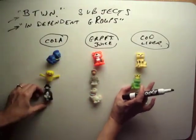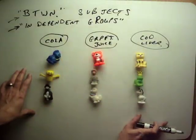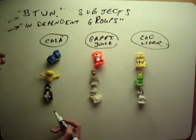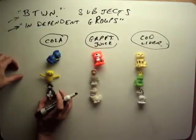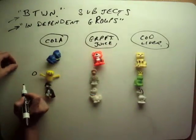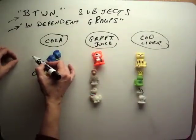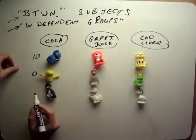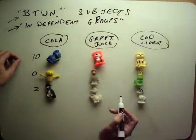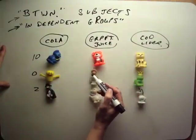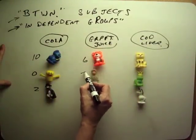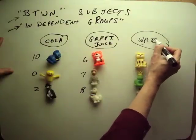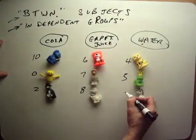This will not be the case when we move to a repeated measures design, but for now different people are in different groups; each person got a different treatment. For example, the alien has taste buds that don't match cola and said it was a zero; the monkey has a sweet tooth and loved it, rating it a 10; and the pirate only likes rum, so he rates it a 2. The grapefruit juice group rated it 6, 7, and 8. And the third group — originally water in our class example — got medium ratings: 4, 5, and 6.